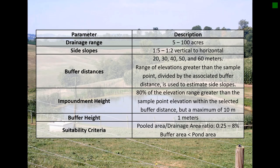Drainage areas above farm ponds are smaller than those for nutrient removal wetlands and overlap with drainage areas for water and sediment control basins, or WASCOBs. They range from 5 to 100 acres. Farm ponds, however, will typically be found along drainage ways that are steeper than identified for wetland impoundments or WASCOBs.